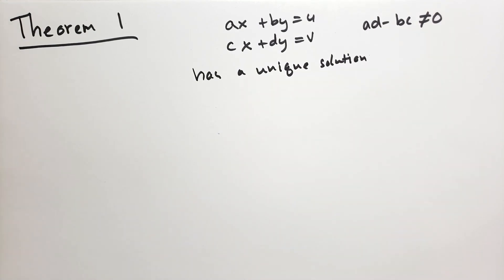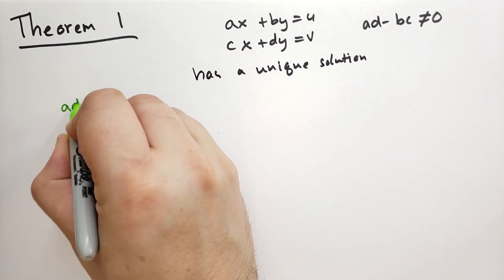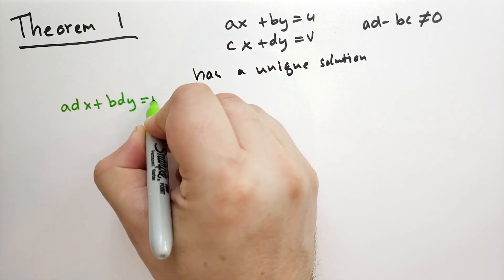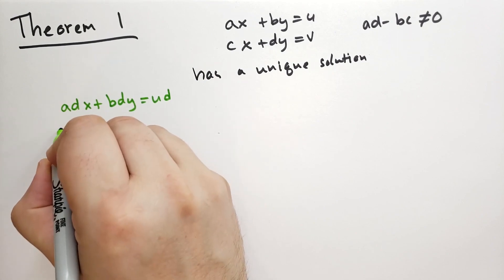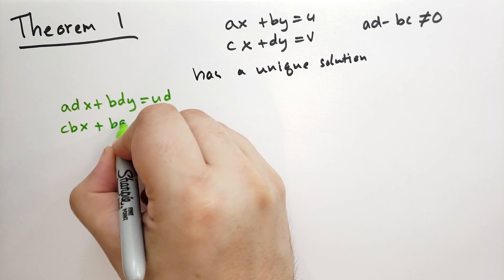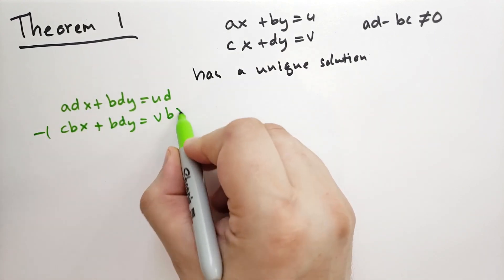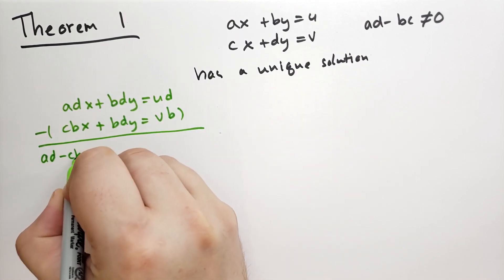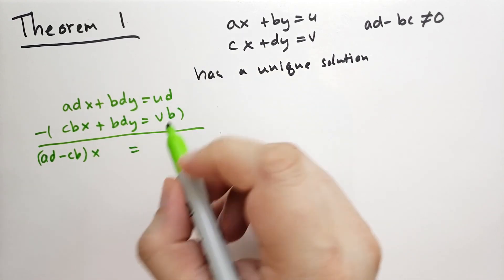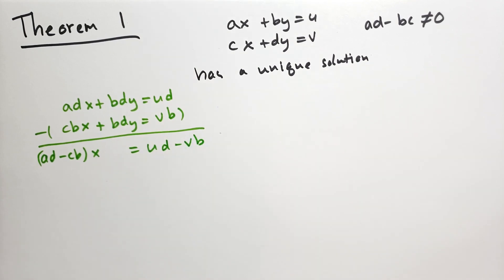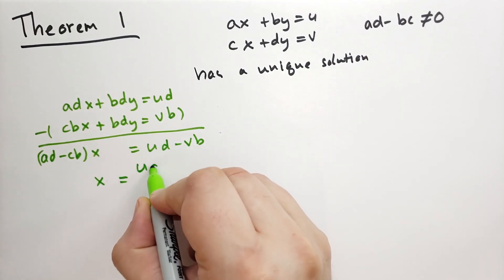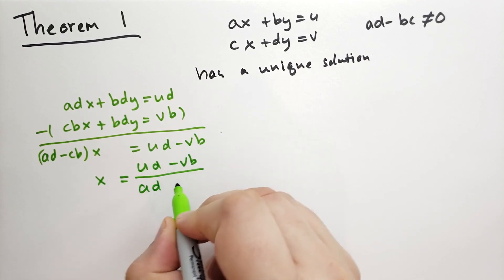We are going to prove this. Going back to chapter 3, we learned how to eliminate variables. He multiplies the top equation by D and the bottom by B, giving ADX + BDY = UD and CBX + BDY = VB. Subtracting the second from the first gives (AD minus CB)X = UD minus VB, so we can solve for X equals (UD minus VB) all over (AD minus BC).